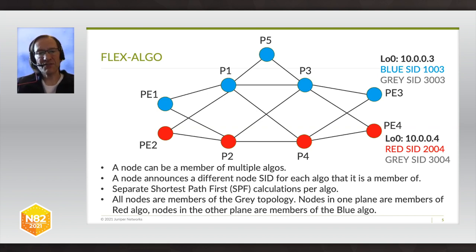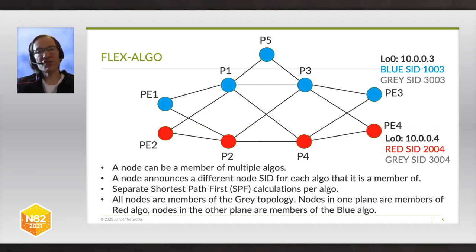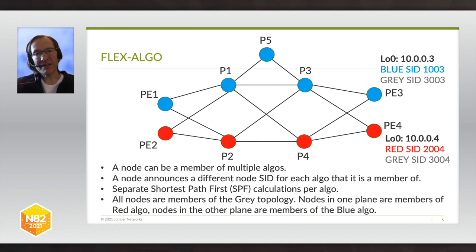All the information necessary for other nodes to know these SID values is communicated via IGP extensions, so all nodes in the network will know these different SID values. Each node performs separate SPF calculations for each topology it's a member of. For example, PE1 performs one set of SPF calculations for the gray topology and a completely separate set for the blue Flex-algo. In general, the outcomes of those calculations could be different because the topologies are different.